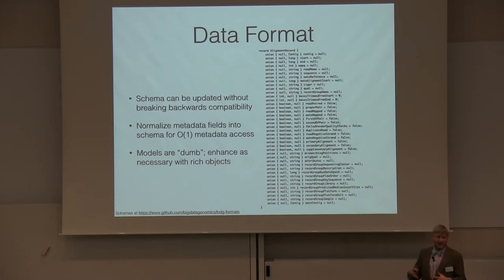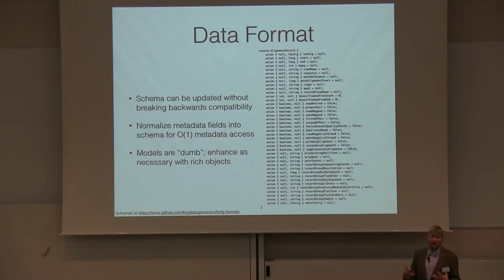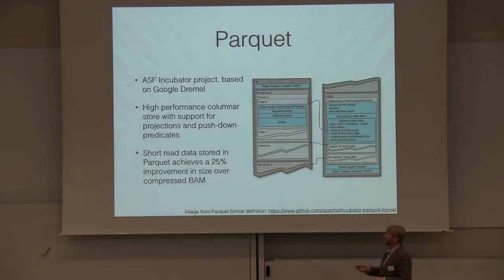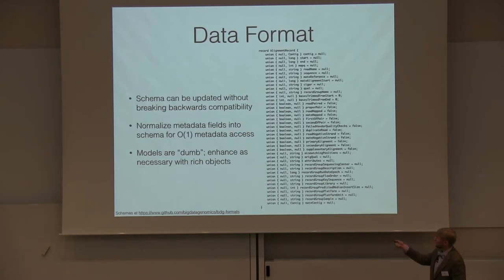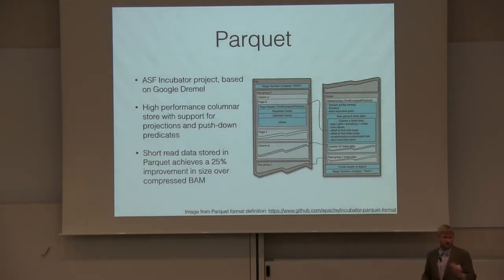We've done everything we can to make the record describing a read as lean as possible, enhancing it with helper objects when needed. For example, the most compact way to store quality scores on disk is as a string, but when processing we want integers or floating-point probabilities — we have rich objects that pull that out at runtime. A lot of this work with schemas — normalizing metadata so you have one copy per record but really one copy per machine — is done using the project Parquet, alluded to in an earlier talk.